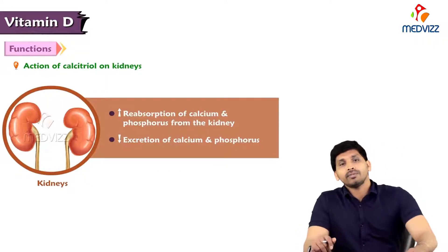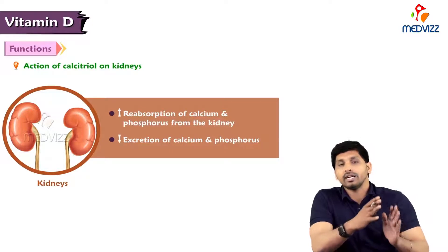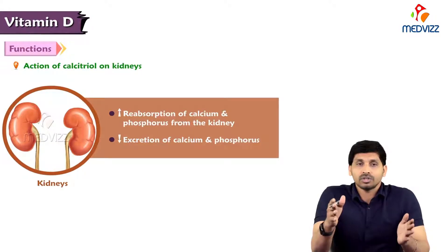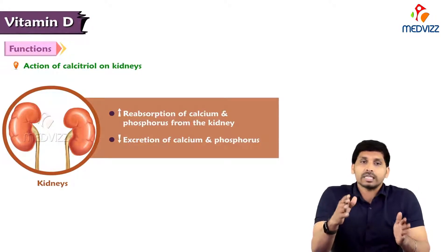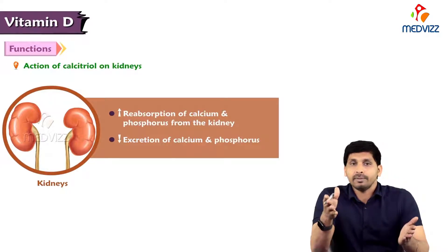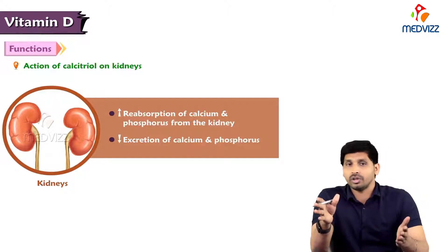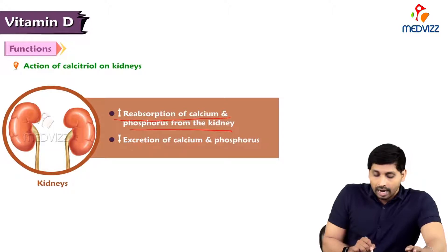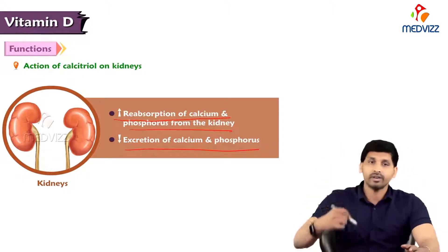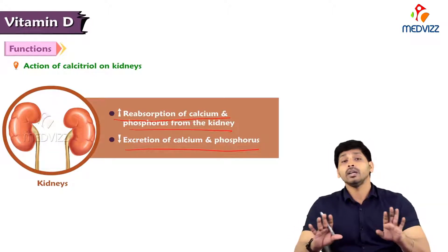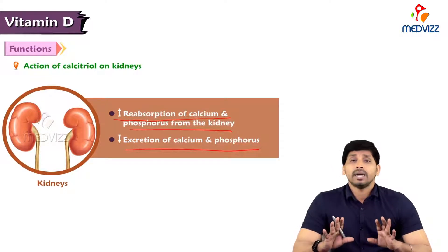The third action is calcitriol on the kidneys. The kidney's role includes reabsorption of important substances — calcium should not simply be excreted in urine. Calcitriol promotes and increases reabsorption of calcium and phosphorus from the kidney and decreases their excretion, thereby raising blood calcium levels. Vitamin D acting at these three different levels promotes and restores blood calcium homeostasis.